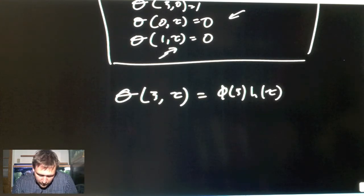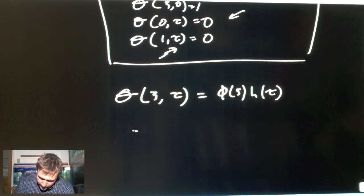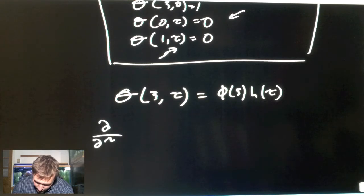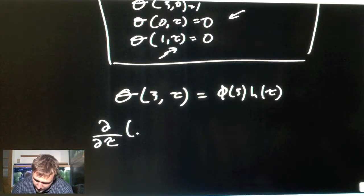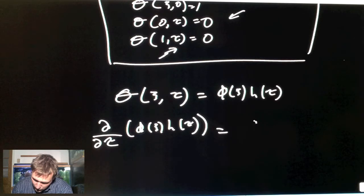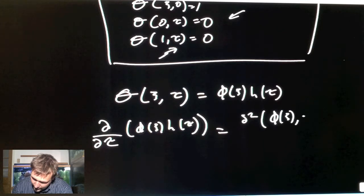For this to work we suppose that the solution can be a product of a function of position, calling it φ, times a function of the time H as a function of τ. So you can substitute this into your differential equation.